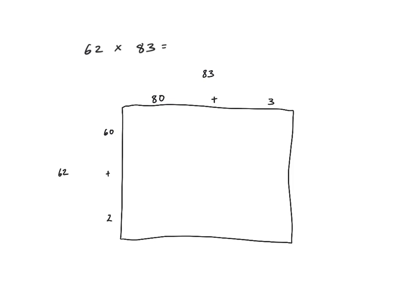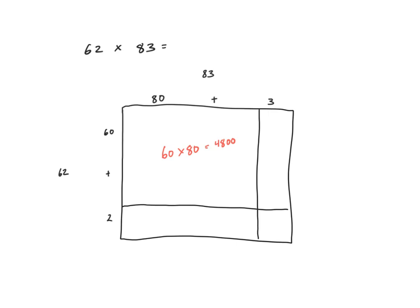Now I'm going to split apart my partial products. The 60 section should be way longer than the 2 section down here, and similarly with the 80 and the 3. This first big rectangle is 60 on the side by 80 on the top — a 60 by 80 rectangle. 6 times 8 is 48, but we have two powers of 10, so that box will be 4,800. The next one is a 60 by 3 rectangle: 6 times 3 is 18 with one power of 10, so it has an area of 180 square units.